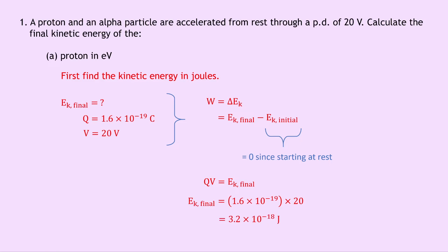That's the final kinetic energy in joules, but I want it in electron volts. So now we need to convert joules to electron volts. Remember one electron volt is equal to 1.6 times 10 to the minus 19 joules, and we can use this to convert between the two. To get from joules into electron volts, I need to divide by 1.6 times 10 to the minus 19. That gives me an answer of 20 electron volts.